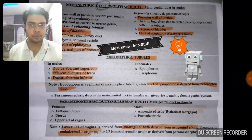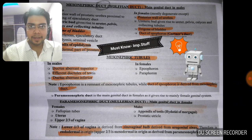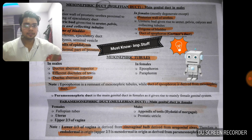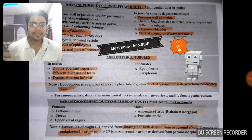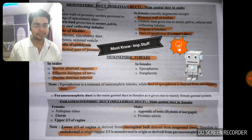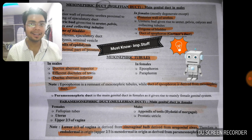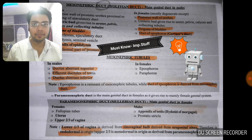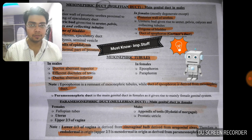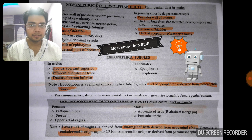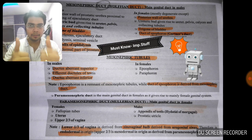Now you should be able to answer these questions: Appendix of epididymis develops from the mesonephric duct. Appendix of testis (hydatid of Morgagni) develops from the paramesonephric duct in males. Trigone of bladder in both cases develops from the mesonephric duct. Duct of epoophoron (Gartner's duct) develops from the mesonephric (Wolffian) duct. Jot these down in your notebook and revise before your exam. All the very best!